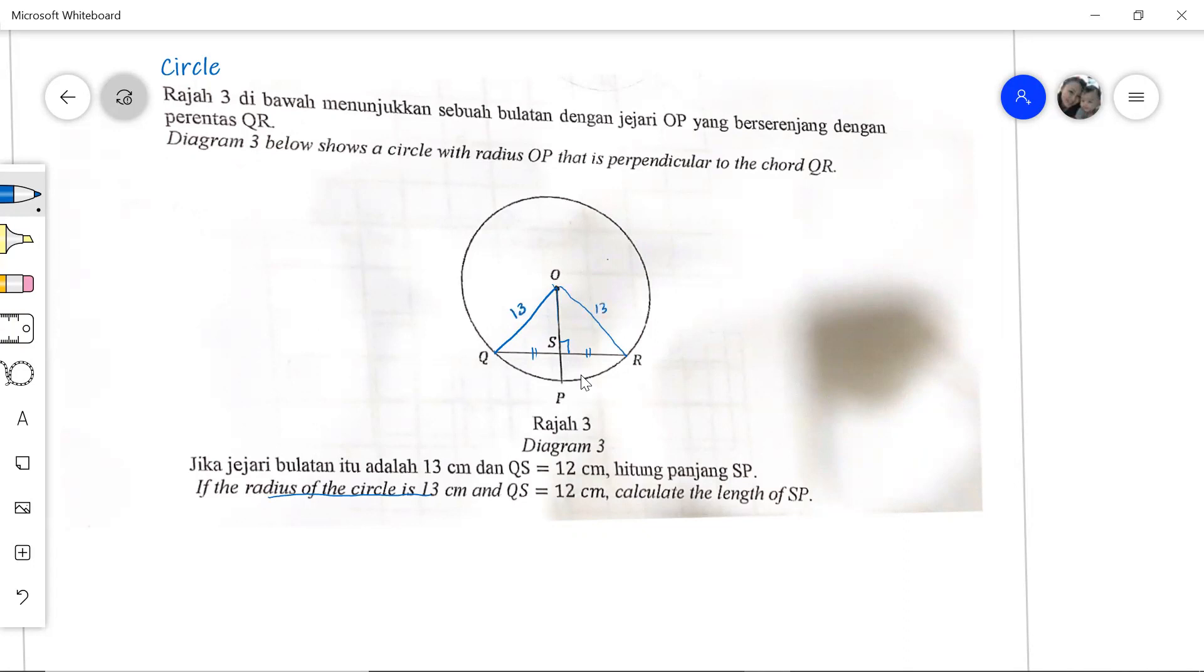And then what else do we know? It says that QS is 12. So if QS is 12, now do you see that we have a right angle triangle here where we need to apply the Pythagorean theorem.